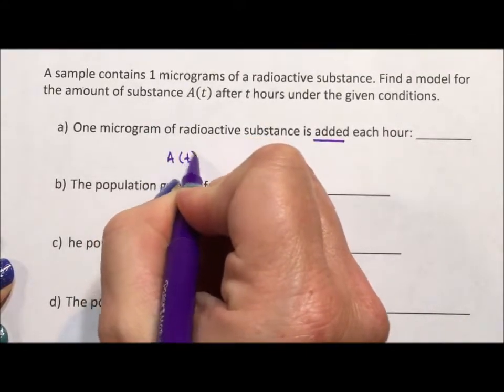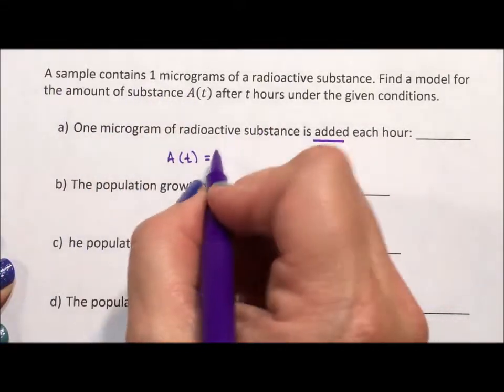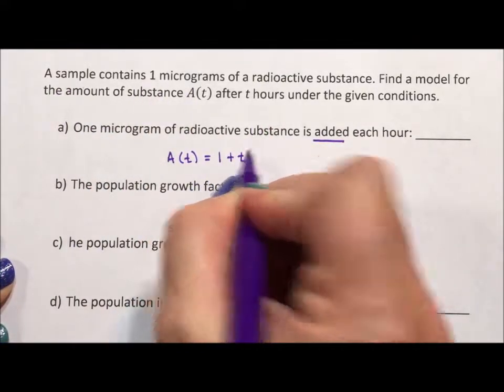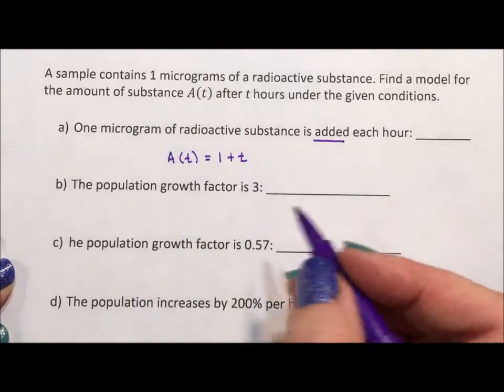So A(t) is going to equal—it starts with one and then we add one per hour. Or if you want to write it in slope-intercept form, you would rewrite that as t + 1.